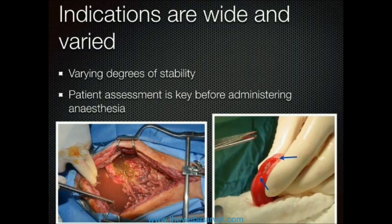Sometimes we're going in where there's an acute abdomen, septic peritonitis, and the dogs or cats are very unstable cardiovascularly. Other cases we're going in to try and diagnose inflammatory bowel disease, just taking some intestinal biopsies, and in those cases the animal is obviously in a much better position for an anesthetic.